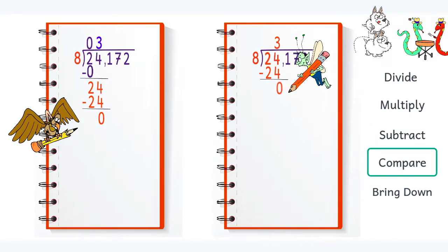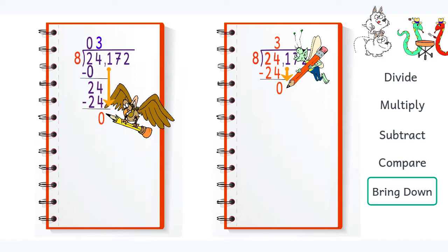The next step is to compare. What we mean when we say that is, we want to make sure that after we have subtracted, the answer is less than what we divided by. Zero is less than eight, so we can move on to the next step and bring down the one.